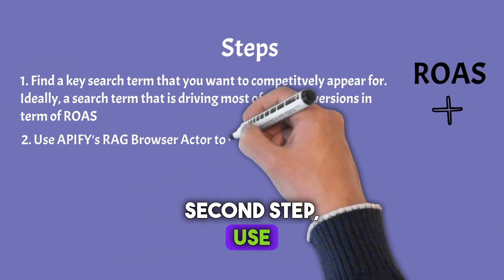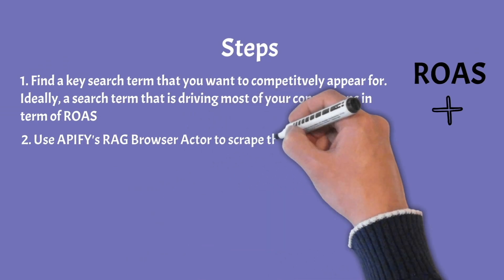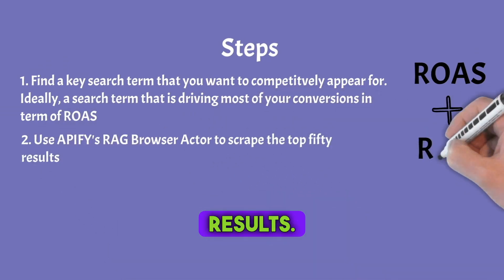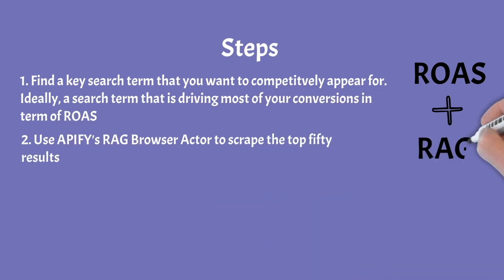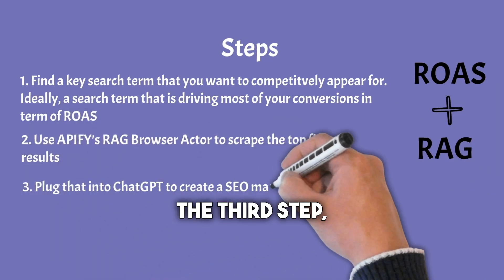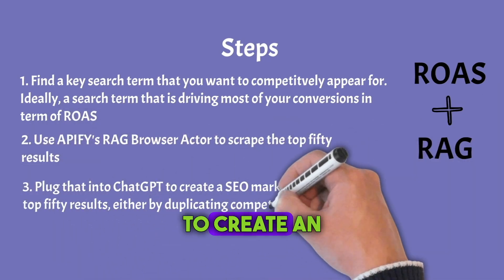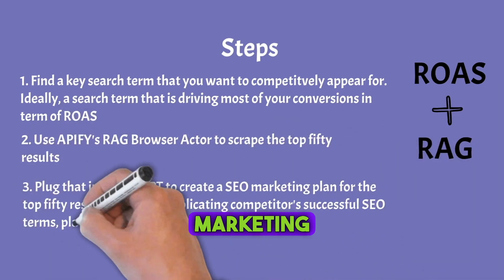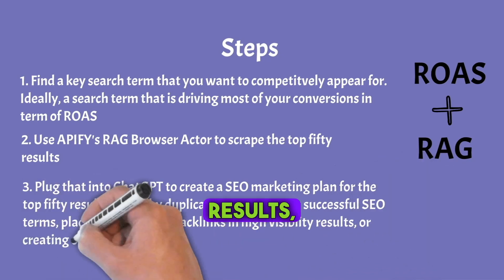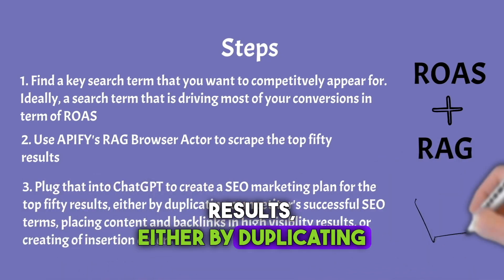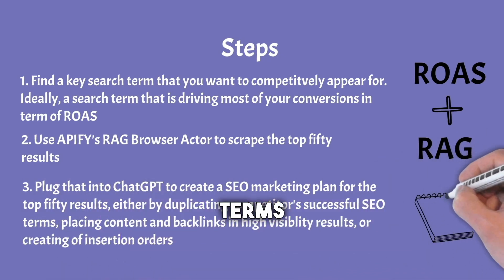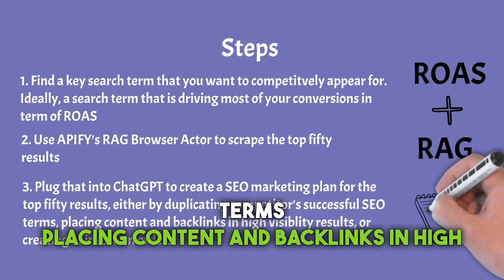The second step: use Apify's RAG browser actor to scrape the top 50 results. The third step: plug that into ChatGPT to create an SEO marketing plan for the top 50 results, either by duplicating competitors' successful SEO terms, placing content and backlinks in high visibility results, or creating insertion orders.